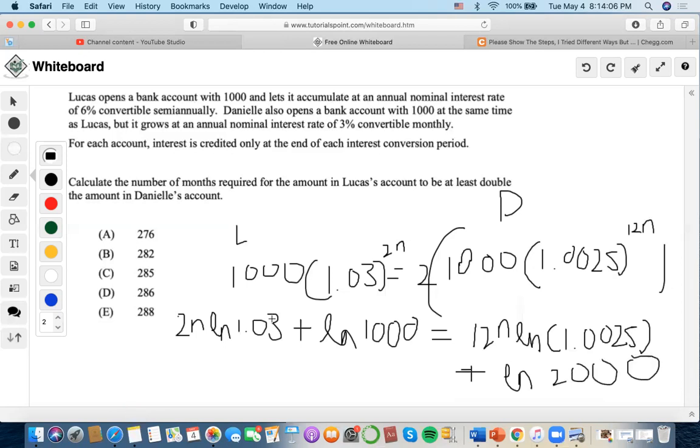Now let's solve. So ln 1.03 is 0.029558. And then next is ln 1,000, which is 6.9077. And then this one is ln 1.0025, which is 0.002449688. We'll multiply that by 12. I'm going to get 0.029962.